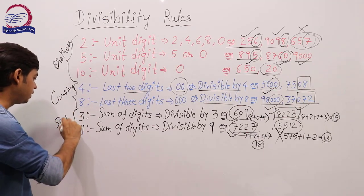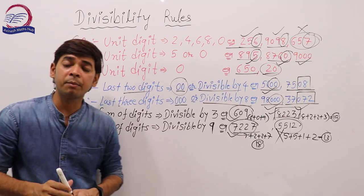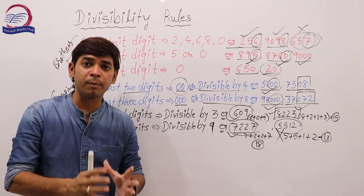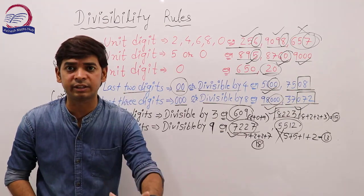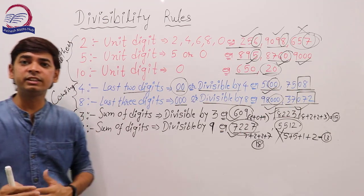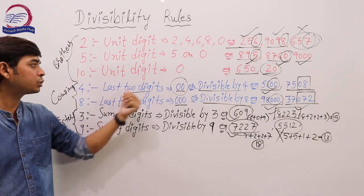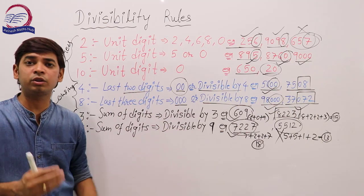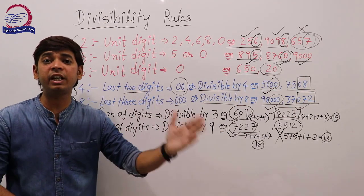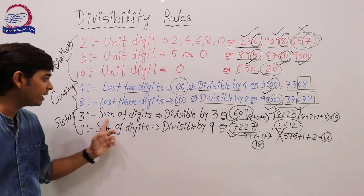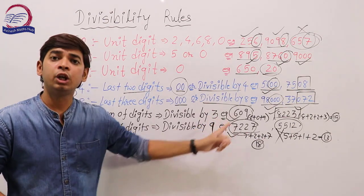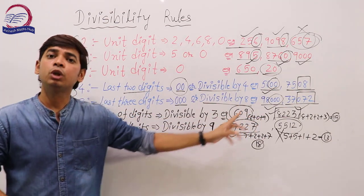Let's revise. Brothers — 2, 5, and 10 — check unit digits. Cousins — 4 and 8 — check last 2 digits and last 3 digits respectively. Sisters — 3 and 9 — check sum of digits. If sum is divisible by 3, the number is divisible by 3. If sum is divisible by 9, the number is divisible by 9.